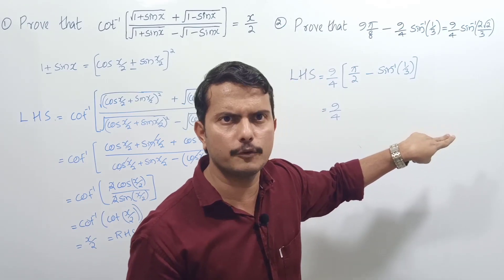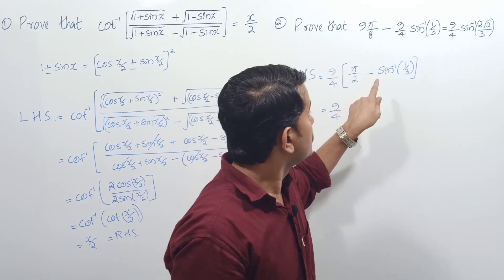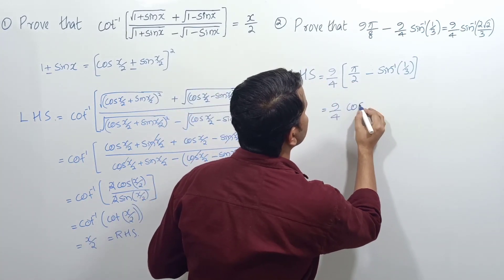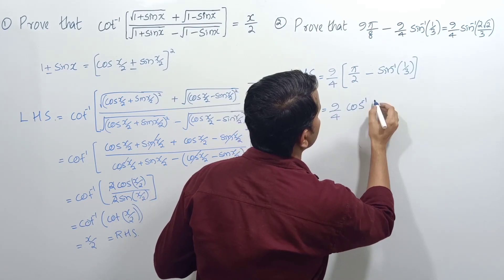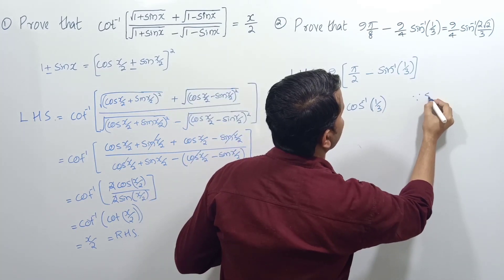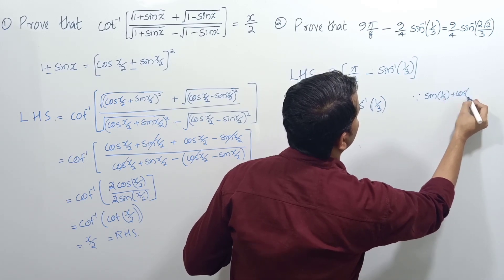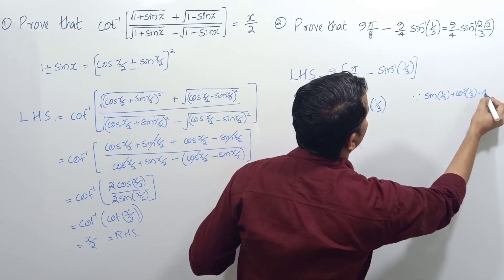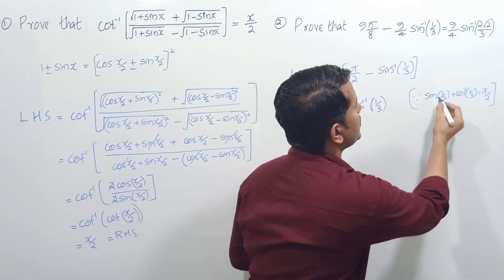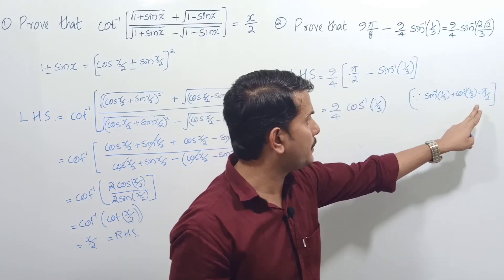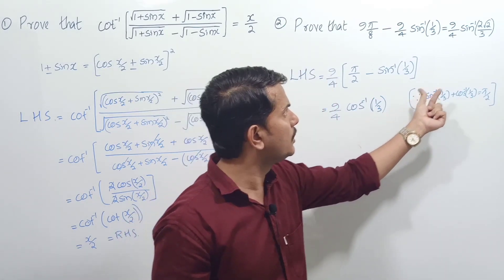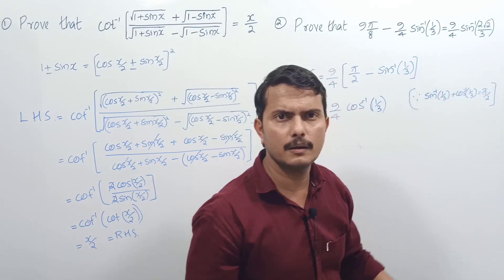Now, π/2 - sin⁻¹(1/3) equals cos⁻¹(1/3), because sin⁻¹x + cos⁻¹x = π/2. So sin⁻¹(1/3) + cos⁻¹(1/3) = π/2, which means π/2 - sin⁻¹(1/3) = cos⁻¹(1/3). But we need to convert this back to sin⁻¹ form.